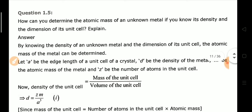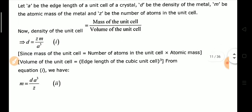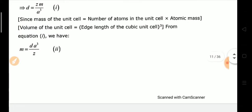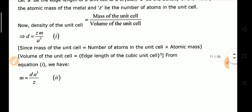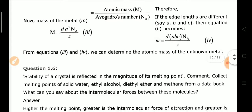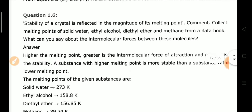Exercise Q5: How can you determine the atomic mass of an unknown metal if you know its density and the dimensions of its unit cell? Using the formula: density (d) = ZM / (a³ × Nₐ), we can rearrange to find M = d × a³ × Nₐ / Z. If density, edge length (a), and the number of atoms per unit cell (Z) are known, the atomic mass M can be calculated. This formula was also used in numerical problems earlier.